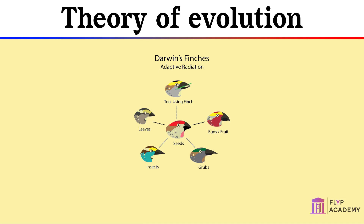Darwin's work was widely discredited and was rejected by the church, as it challenged the idea that God created all of the living things on earth. Darwin's theory was also lacking in evidence. There was very little known about the mechanism for inheritance, and there was no knowledge of genes or DNA being linked to physical characteristics. This meant that even other scientists rejected Darwin's ideas.